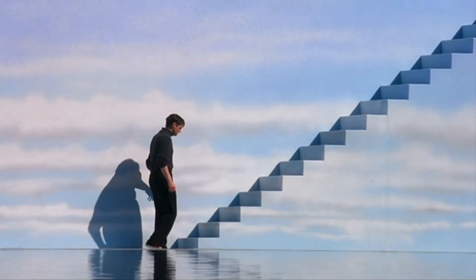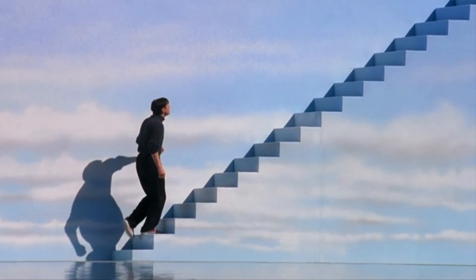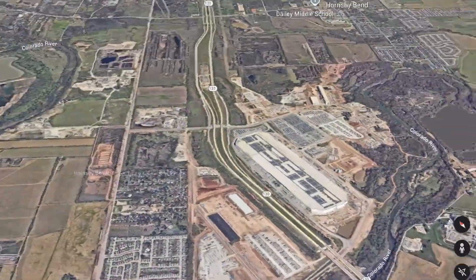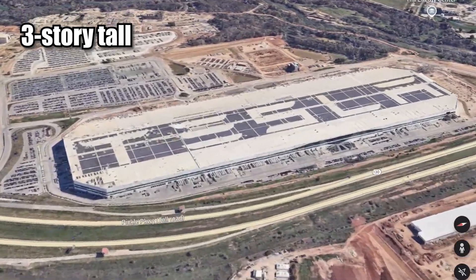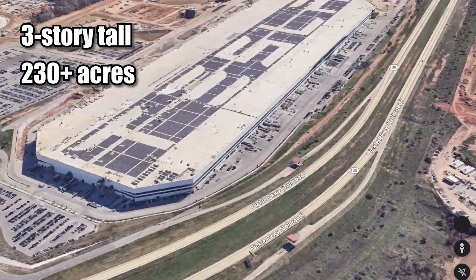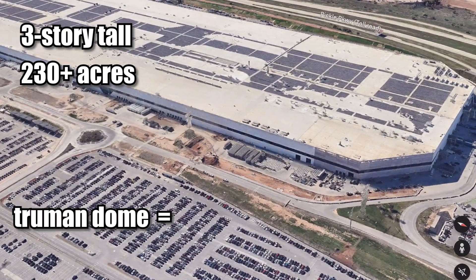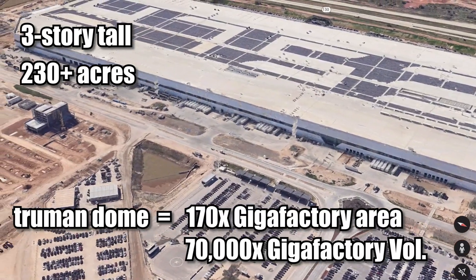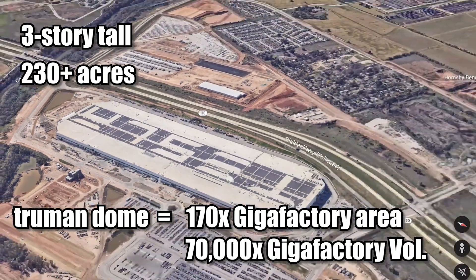Now, I've been throwing around the name, the largest building, but do you know what it is in the real world? Well, by area, it's actually the elongated Muskrat development, the Tesla Gigafactory based just outside of Austin, Texas. This squat, three-story building occupies over 230 acres of land, putting it on the scale of a small lake or reservoir. Even still, the Truman Dome would eclipse it by a factor of 170 times in area and 70,000 times over by volume. It's really on a different scale.